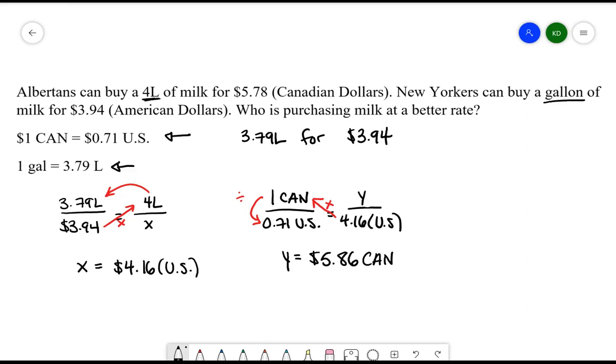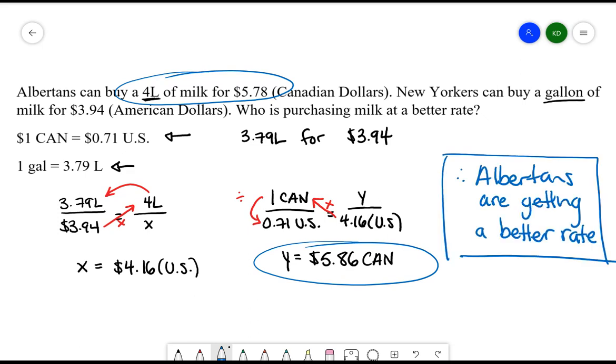So who's getting the better price? So when we compare this, in Alberta, I can go and buy 4 liters of milk for $5.78. If I was in the U.S. and I was in New York, I would buy the same 4 liters of milk for $5.86. So in this question, Albertans are actually getting a better price for milk. And then we're done.